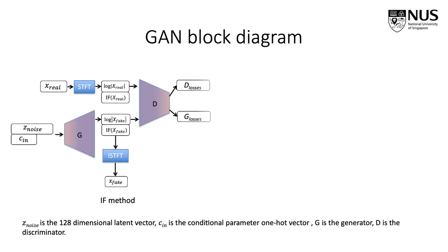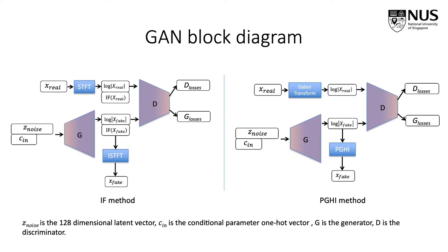We adopt the current state-of-the-art GAN-Synth architecture, which consists of a progressively growing Wasserstein GAN where G is the generator and D is the discriminator. The IF method model uses a two-channel IF spectrogram representation, while our proposed model uses a single-channel log-magnitude of the short-time Fourier transform with a truncated Gaussian window. The input to the generator is a 128-dimensional random vector drawn from a spherical Gaussian distribution, along with a one-hot conditional vector representing pitch for musical instruments and center frequency for pop and chirp datasets.